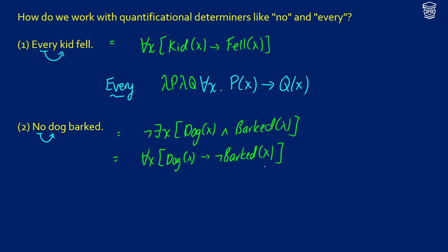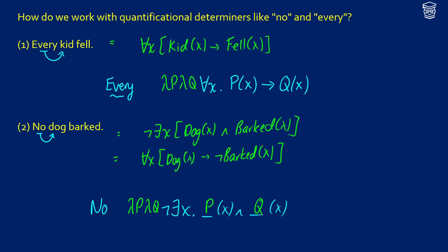In terms of 'no,' we're saying there does not exist an X. We're looking for some predicate and some other predicate, so we abstract: lambda P, lambda Q, where P and Q are the predicates we're searching for. In this case, it would be 'dog' and 'barked.'